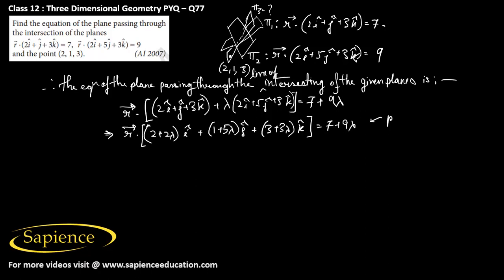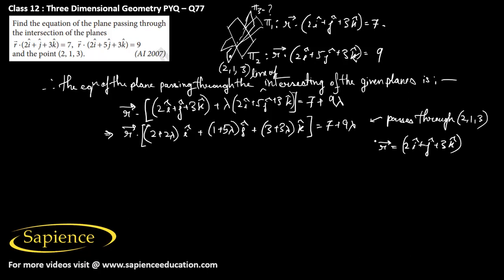Since this plane also passes through the point (2, 1, 3), it must satisfy the equation. The position vector of this point is 2î + ĵ + 3k̂, so we substitute r⃗ = 2î + ĵ + 3k̂ into the equation to find the value of λ.